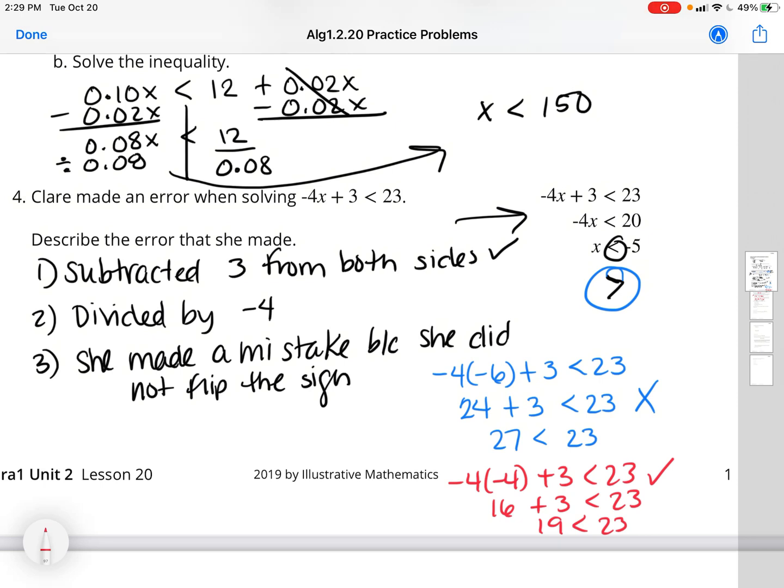And you can check your answer is correct by plugging in some values for the variable. So let's say that x was less than negative 5. Well, negative 6 is less than negative 5. So I plugged in negative 6. And I got negative 4 times negative 6. A negative times a negative is a positive. 24 plus 3. Well, 24 plus 3 is 27. 27 is not less than 23. So that proves right here it doesn't work.